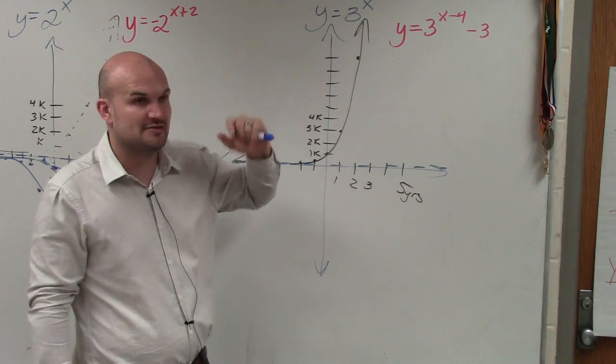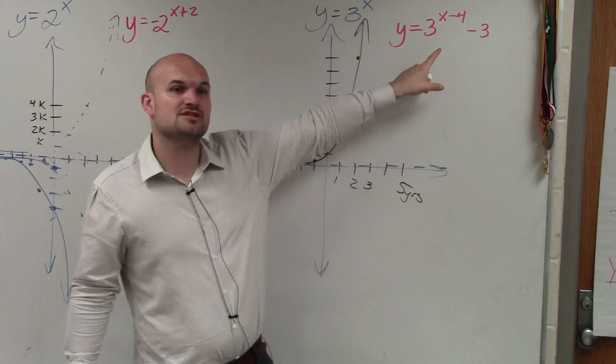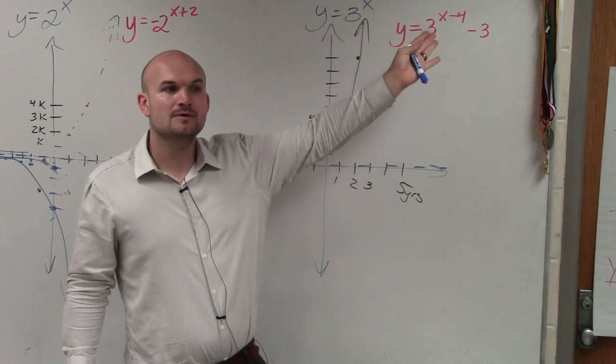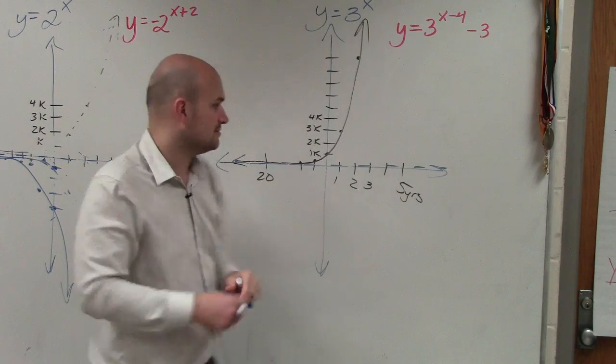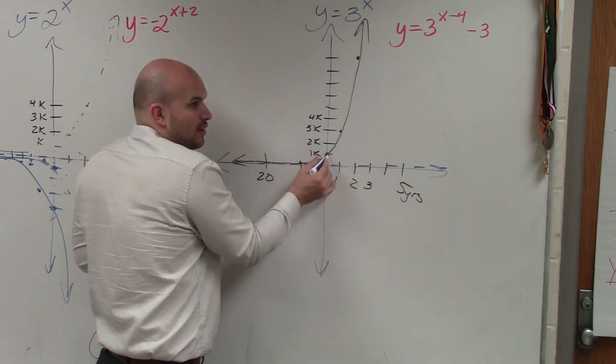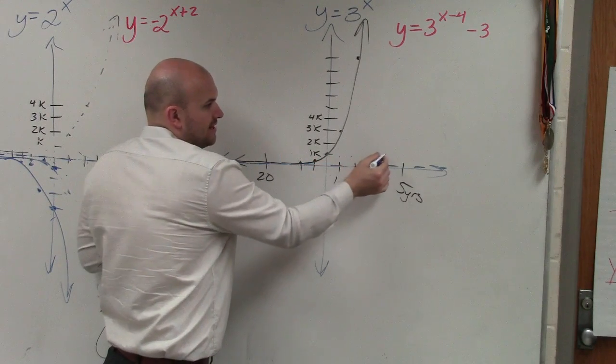Now let's go and take a look at the transformations. This transformation tells us to shift the graph over where? Four units to the right. So I'm literally, I'll just take the y-intercept, move that over four units. One, two, three, four.